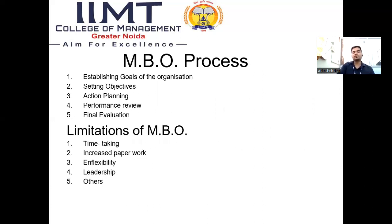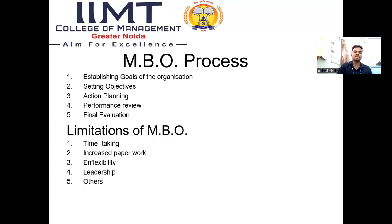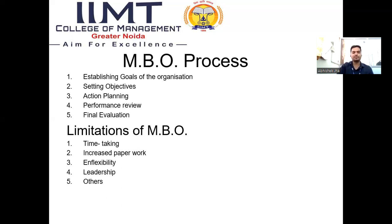The MBO process: first, establish the goals of the organization. Second, set the objectives and action planning. Third, performance review. And after all the agendas, we must evaluate our process — that is final evaluation. But MBO has limitations: it is a time-consuming process requiring a lot of brainstorming sessions and paperwork activities. It is inflexible sometimes, because the execution of a plan by the top level may be forcefully imposed on the middle or lower level, leaving technically no independence or leadership.